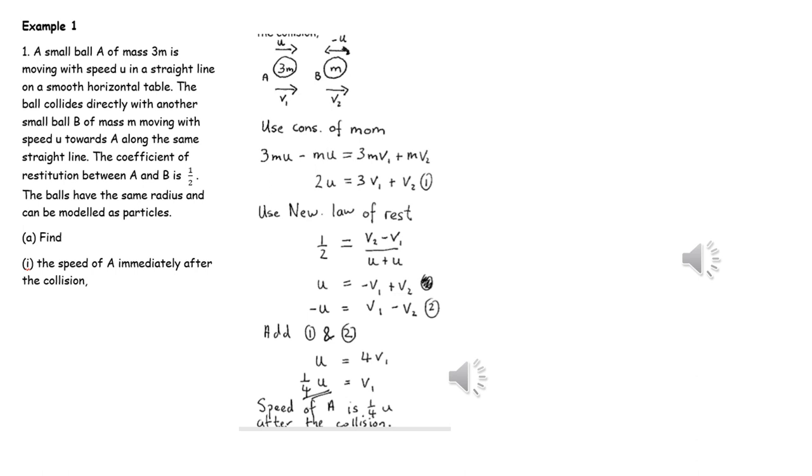We consider the collision between A and B and use conservation of linear momentum and Newton's law of restitution. This gives us two equations with two unknowns which we can solve simultaneously to work out the speed of A after the collision.